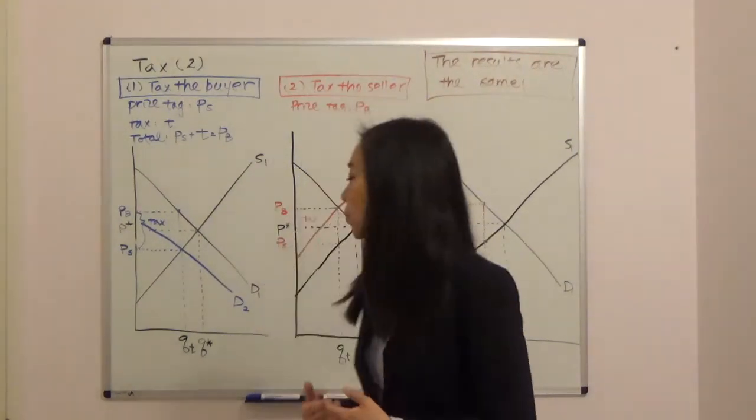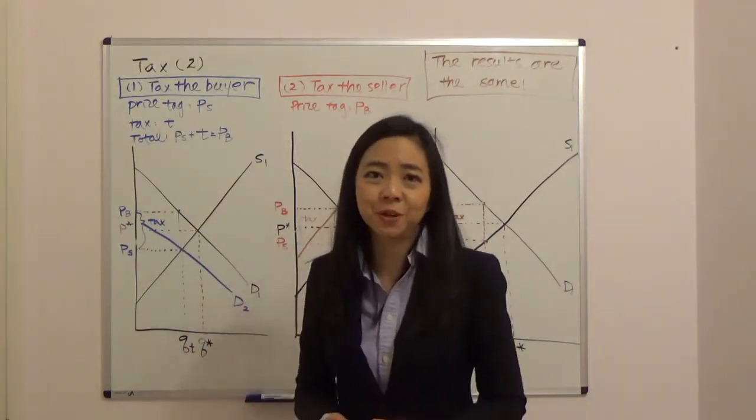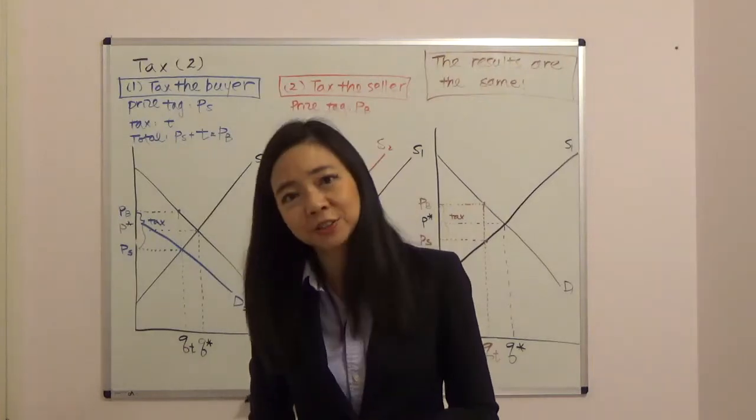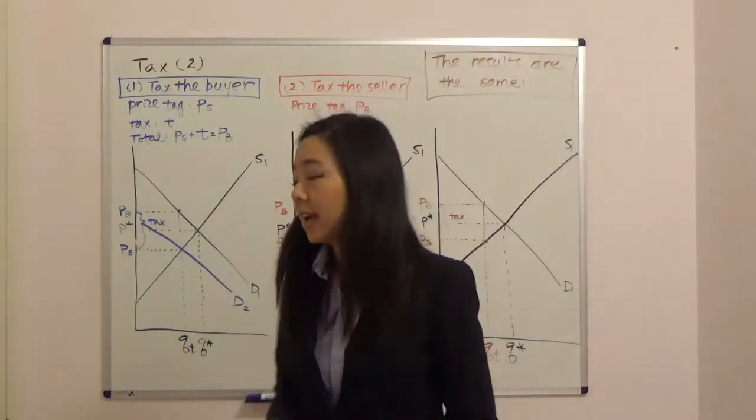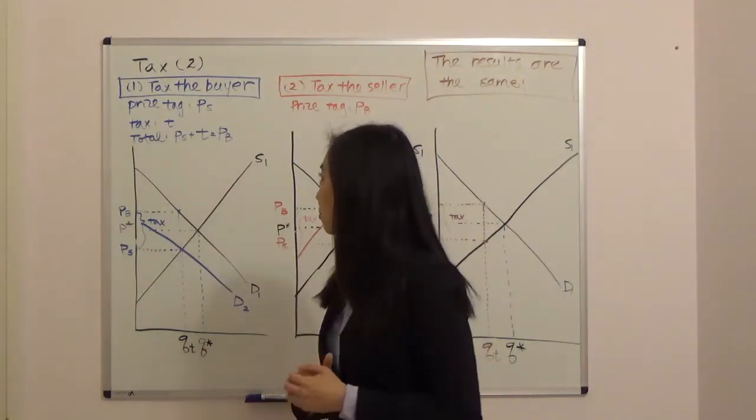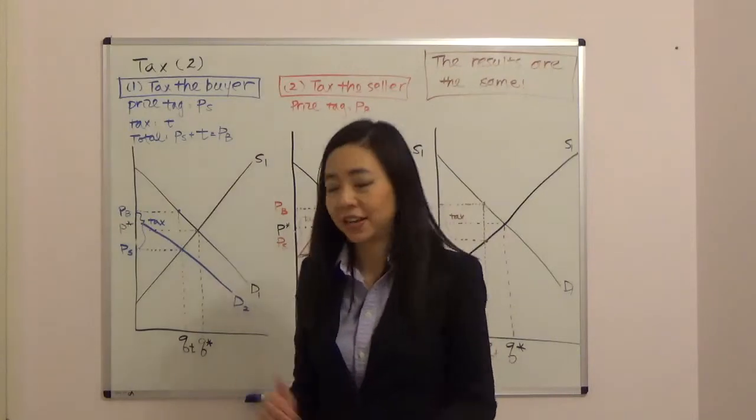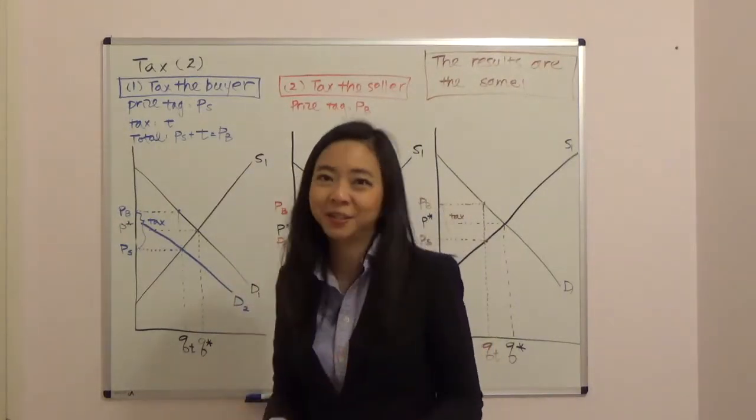And today I'm going to use the demand and supply curve to show you graphically why it doesn't matter whether the government imposed a tax on the buyer or the seller. And we're going to look at two cases. The first case is that government tax the buyer and the second case is the government tax the seller. And you're going to see the result will be exactly the same.